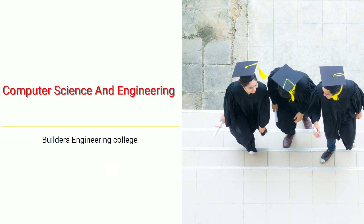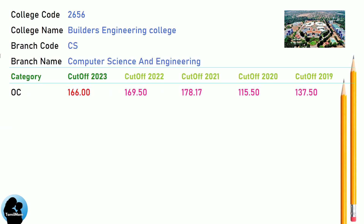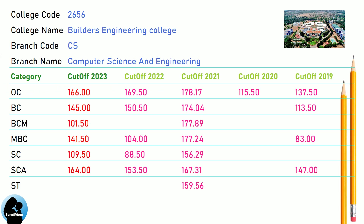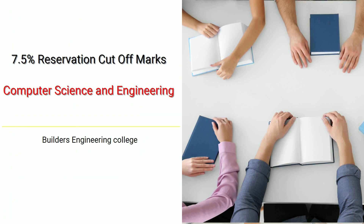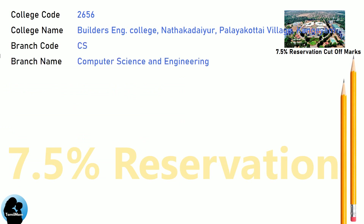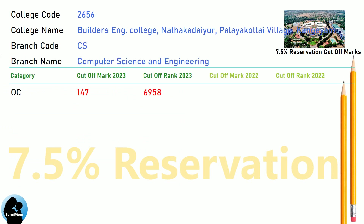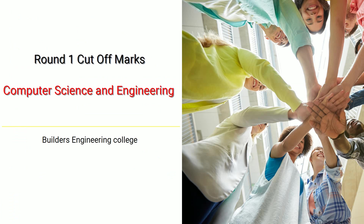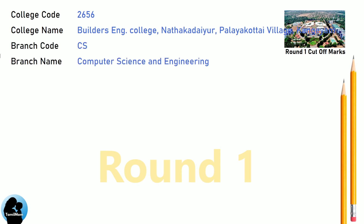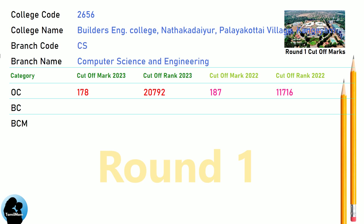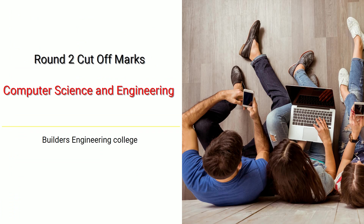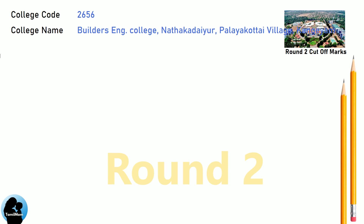DNA Cut-Off for Builders Engineering College in Computer Science and Engineering. DNA 7.5 Reservation Cut-Off for Builders Engineering College in Computer Science and Engineering. DNA Round 1 Cut-Off and Round 2 Cut-Off for Builders Engineering College in Computer Science and Engineering.